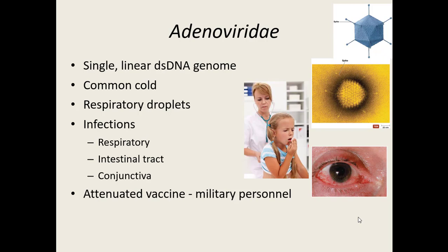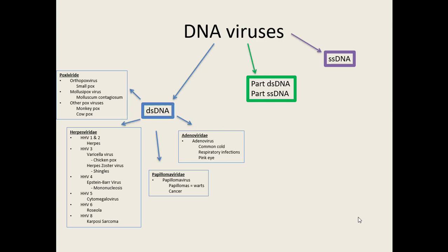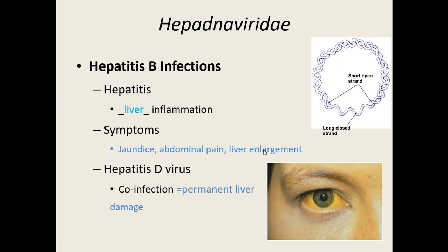On to our next group: there's only one family that has part double-stranded DNA and part single-stranded DNA in its replication — the hepadnaviridae. Anything with 'hepat' in it has something to do with the liver. The hepadnaviridae virus causes hepatitis B infections. The word hepatitis — 'itis' means inflammation — so hepatitis is liver inflammation. If your liver becomes inflamed, the top symptoms that follow are jaundice, yellowing of the skin and eyes, liver enlargement, and abdominal distress, and sometimes bleeding underneath the skin.